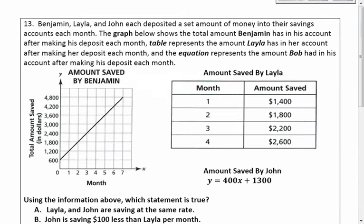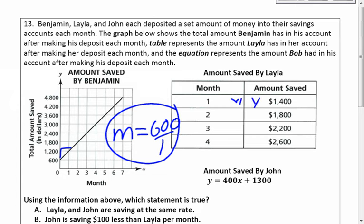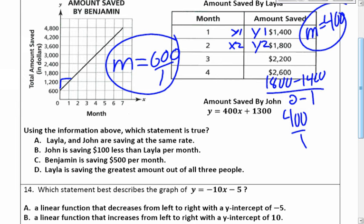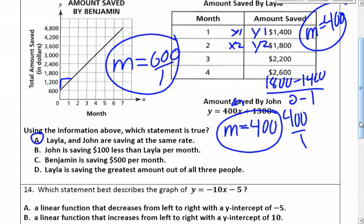Number 13: Benjamin, Layla, and John each deposited money into savings each month. The graph shows Benjamin's data, the table shows Layla's, and the equation shows John's. For Benjamin, rise over run is 600 over 1, so his rate of change is 600. For Layla, using y2 minus y1 over x2 minus x1: 1800 minus 1400 over 2 minus 1 equals 400 over 1, so her rate is 400. For John, since it's an equation, the number in front of x is 400 as well. The correct statement is A: Layla and John are saving at the same rate — both saving 400 each week.